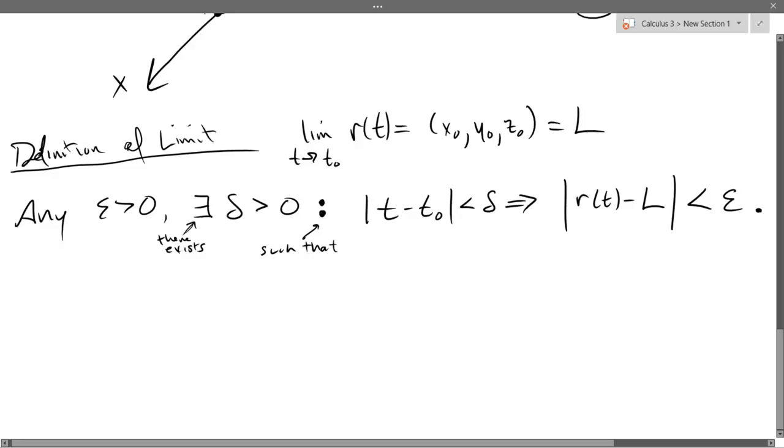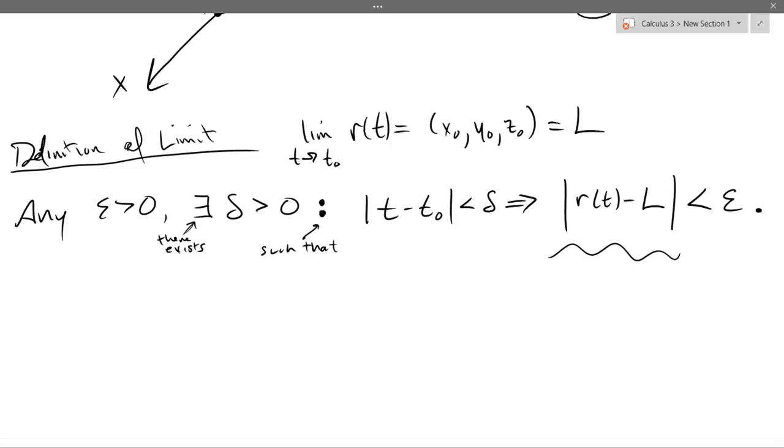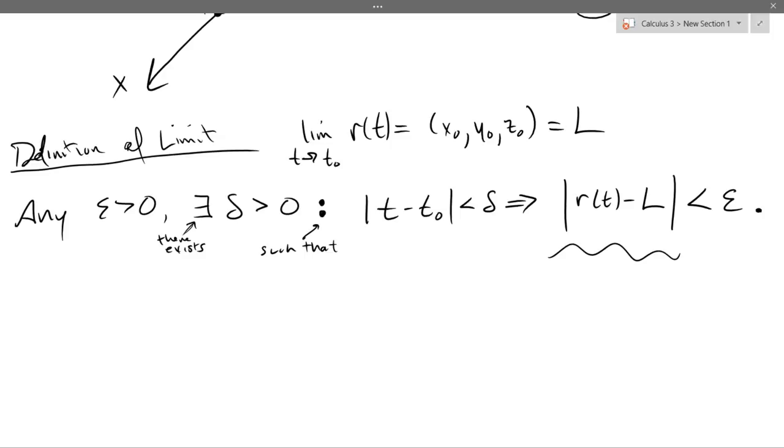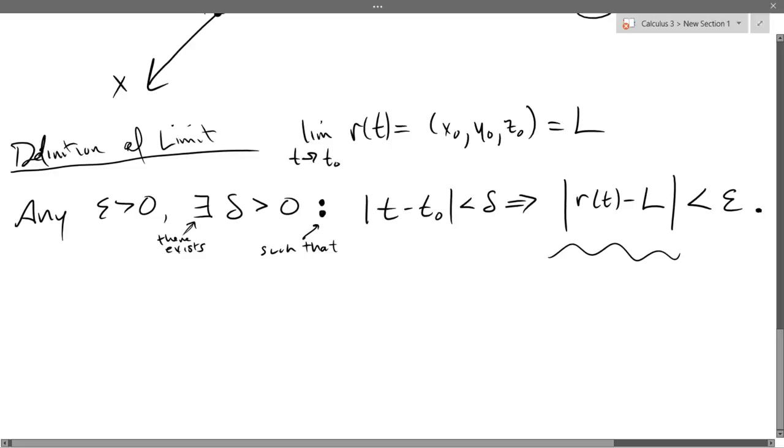There is, however, one difference here. What is r of T minus L? Real value or vector? Vector. So what do those vertical bars actually mean? They mean magnitude. So we have a vector magnitude needs to be small. That's what that means right there. Another way to think about it, that means those two points, r of T and L, are very close together. This is actually magnitude of a vector.